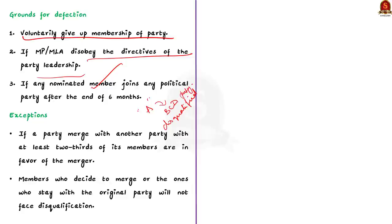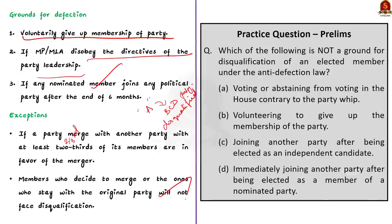There are certain exceptions to the anti-defection law. The law allows a party to merge with another party if at least two-thirds of its members are in favor of the merger. In such a scenario, neither the members who decide to merge nor those who stay with the original party face disqualification. One major drawback of this law is that it restricts a legislator from voting in line with their conscience, judgment, and the interest of their electorate. This is a potential topic for both preliminary and main examination.